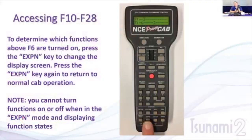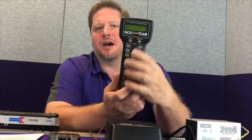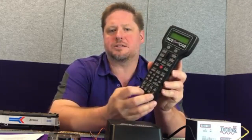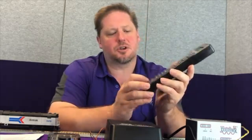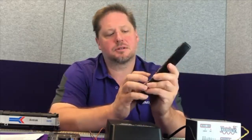One useful feature on the NCE PowerCab and ProCab is the EXPN button — expansion — which shows a list of all functions and their current state, so you can see which are on and which are off. When I push it on my throttle here, I can see that function 15 is on and function 23 is on. Note: you can't turn functions on or off while in expansion mode — it's just a quick reference. Hit expansion again to exit, and you're back to normal operation.